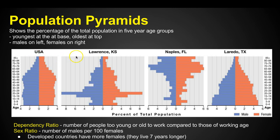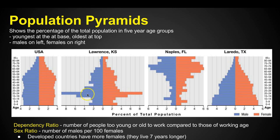Now, switching over to Lawrence, Kansas — still in the United States, but this is a very specific city and situation. You look at it and part of it is kind of similar to the United States overall, but why in the world do we have these two arms sticking out? What is going on? Well, what's the age group? It's like late teens, early twenties.